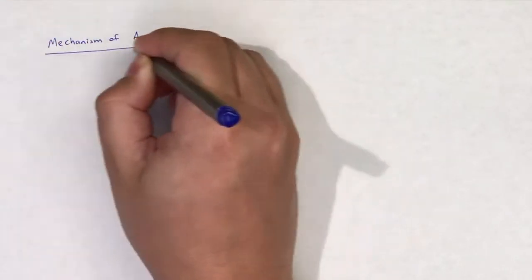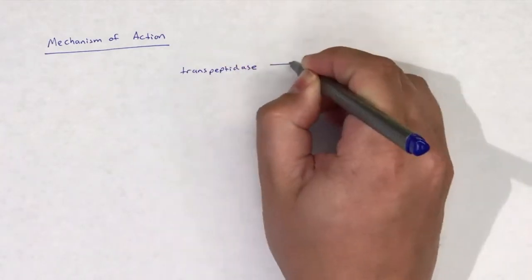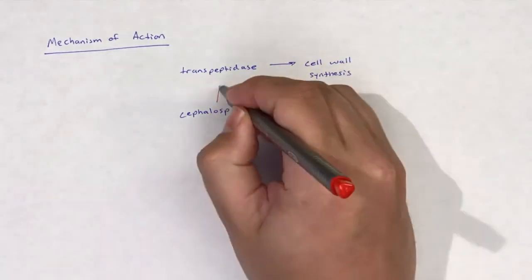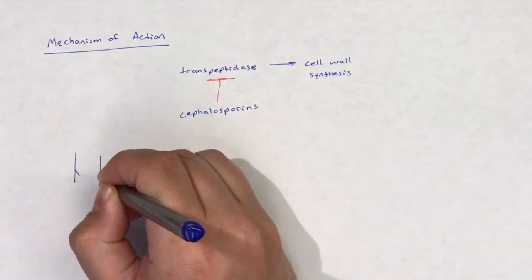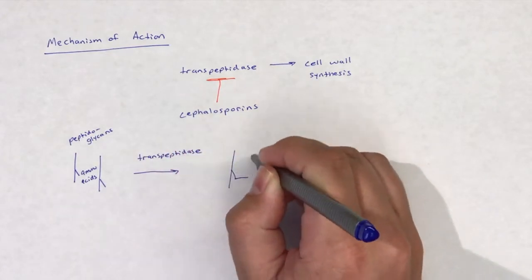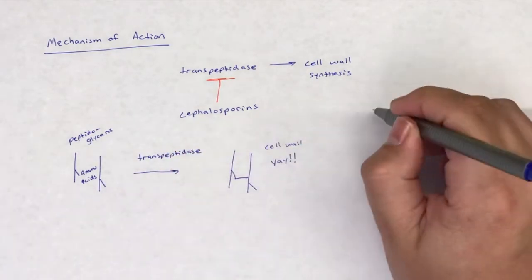Third-generation cephalosporins share the same mechanism of action as other cephalosporins. Cephalosporins are cell wall synthesis inhibitors and are bactericidal. Cephalosporins kill bacteria by interfering with the transpeptidation reaction by binding to and inhibiting transpeptidase.